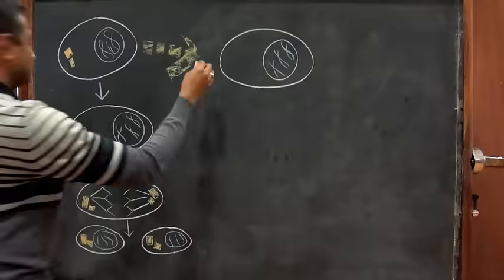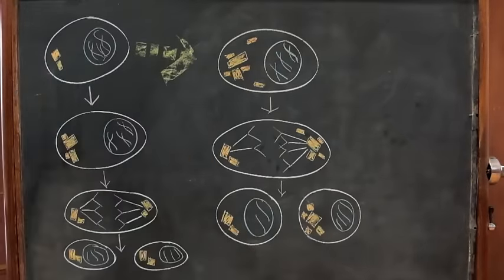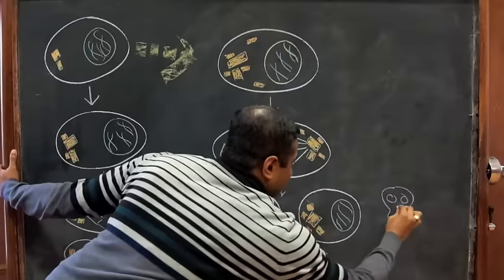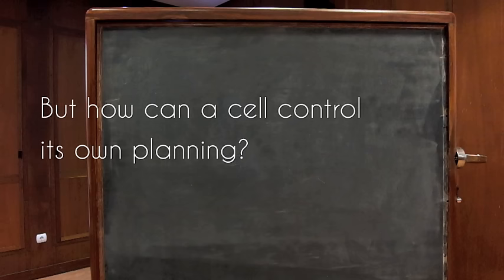If the number or place where new centrioles form is wrong, cells can become dysfunctional and cause serious problems to the organism, such as cancer. But how can the cell control its own planning?